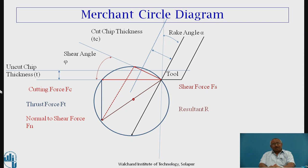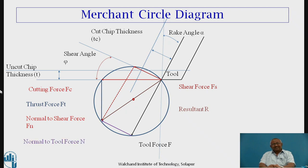Then we draw the tool force along the line of the tool face from the tool point, which cuts the circle at the point shown in the diagram. This tool force is denoted by F. We then draw a perpendicular line joining the resultant, representing the normal to the tool force, denoted by N. We measure the magnitudes of F and N, and transforming them with the proper scale gives the values in newtons. This way we can graphically represent and calculate all the forces.